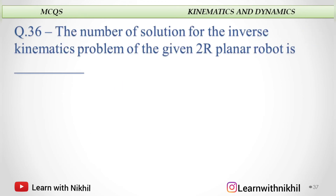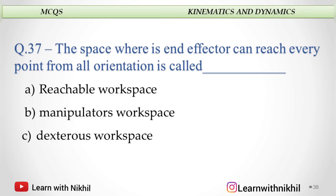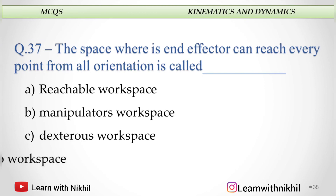The number of solutions for the inverse kinematic problem of a given 2R planar robot is: 6, 3, 4, or 2. The answer is 2. The space where the end effector can reach every point from all orientations is called: reachable workspace, manipulator's workspace, dexterous workspace, or no workspace. The answer is dexterous workspace.